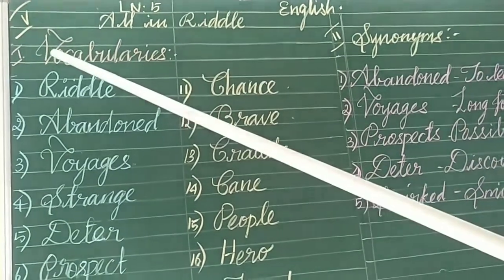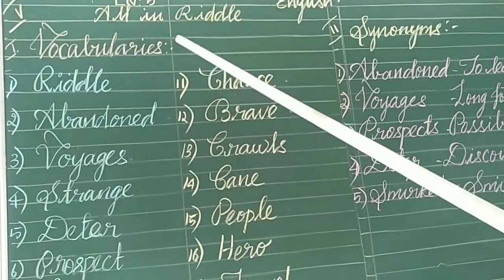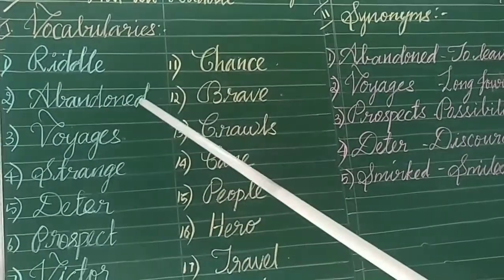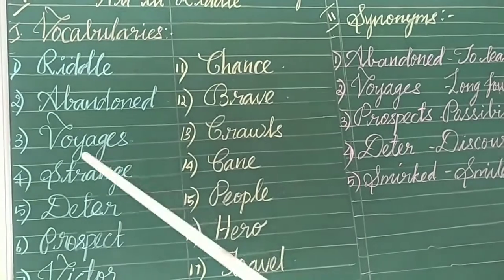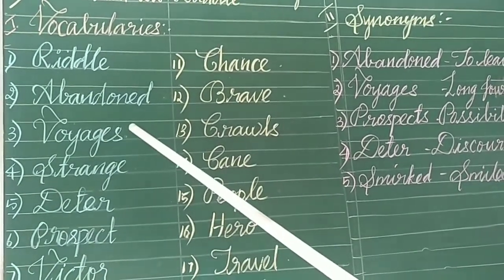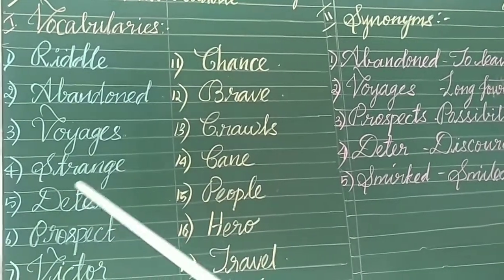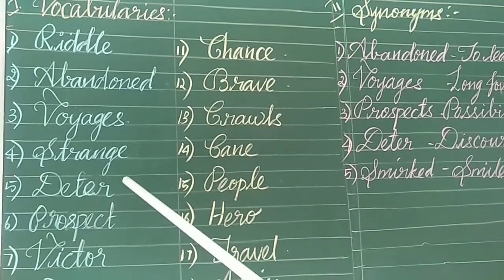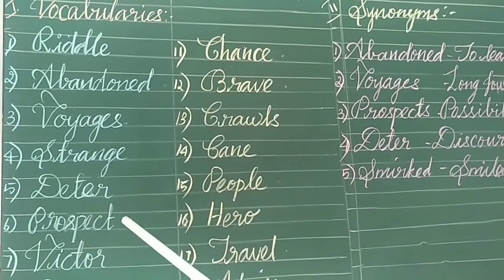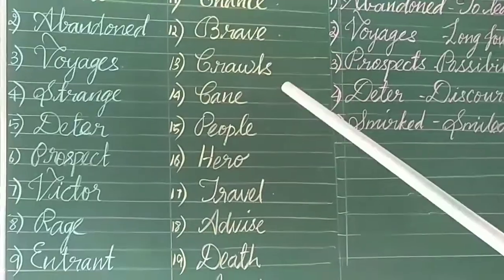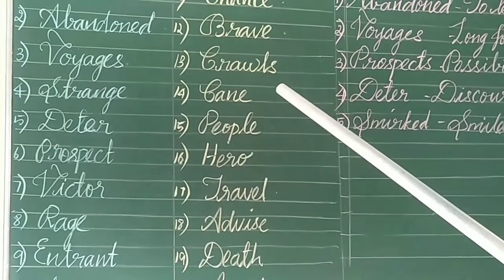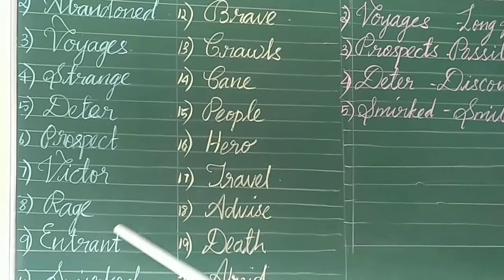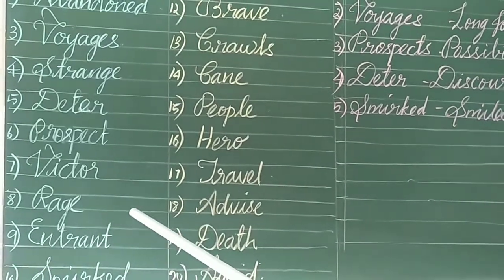The past Roman vocabularies. Riddle – Vidugaday. Abandoned – Kai Vidugaday. Voyages – Pailangal. Strange – Visitramana. Cheeto – Thadukal. Prospect – Vetri. Rage – Arthiram.